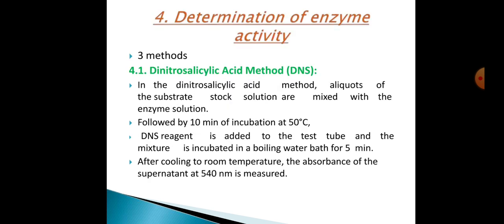For determination of enzyme activity, there are three methods. In the dinitrosalicylic acid (DNS) method, aliquots of the substrate stock solution are mixed with enzyme solution, followed by 10 minutes of incubation at 50 degrees Celsius. Then DNS reagent is added to the test tube and incubated in a boiling water bath for five minutes. After cooling at room temperature, the absorbance of the supernatant at 540 nanometers is measured.